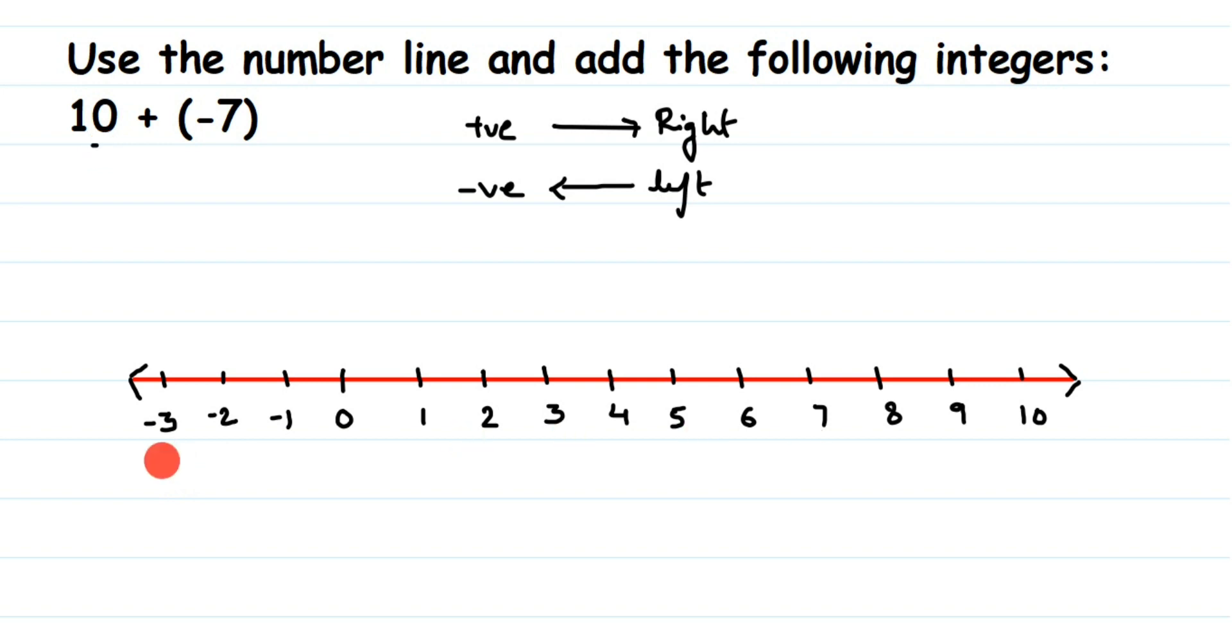So 10 is here on the number line. From here, I'm adding minus 7. Minus 7 is a negative integer, so we have to go towards the left side.